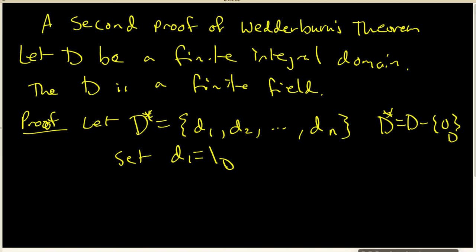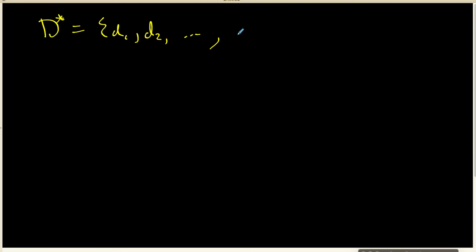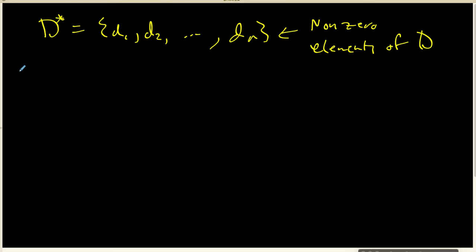What I want to do is look at an arbitrary element of this set. So we have to pick an arbitrary D_i inside D*. We need to find a multiplicative inverse for D_i. D* is D_1, D_2, all the way up to D_n — the nonzero elements of our domain D.